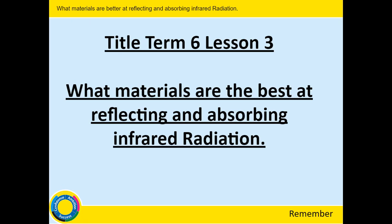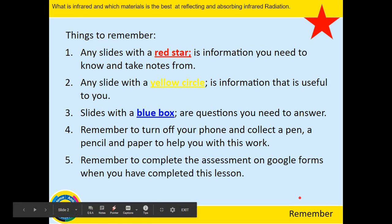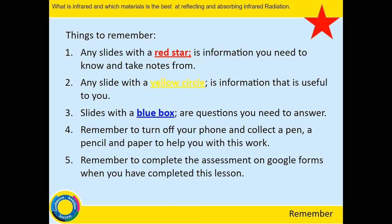Lesson three: what materials are best at reflecting or absorbing infrared radiation? Things to remember: a red star means information you need to take notes on; a yellow circle marks new information for this lesson that you need to be aware of but don't need to note; and a blue box contains questions you need to answer. Turn your phone off, collect a pen, pencil, and paper, and remember to complete the assessment on Google Forms after going through this slideshow.